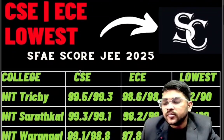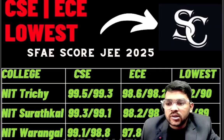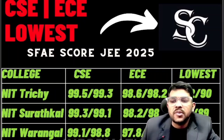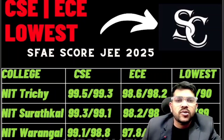Next is NIT Surathkal: 99.3 / 98.2 for CSE and 91 for the lowest branch — these are for male students. After the slash you can check the data for female students.